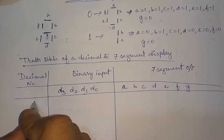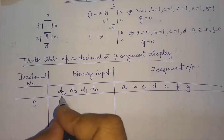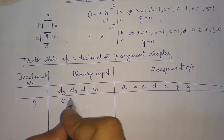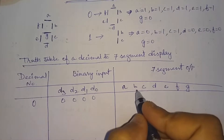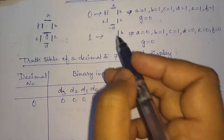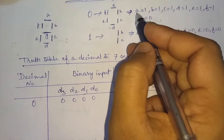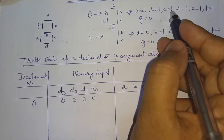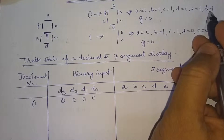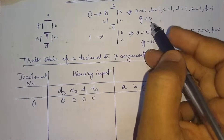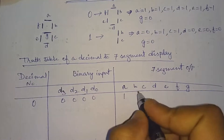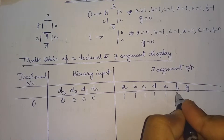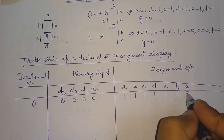For the decimal number 0, the binary representation is 0, 0, 0, 0. For the digit 0, we had A equal to 1, B equal to 1, C equal to 1, D equal to 1, E equal to 1, F equal to 1, and G equal to 0. So here we'll put these values.